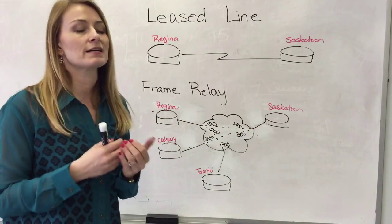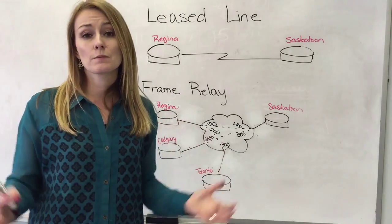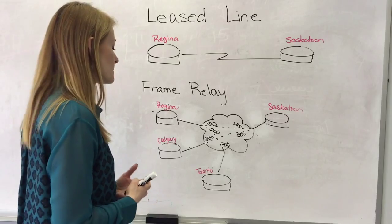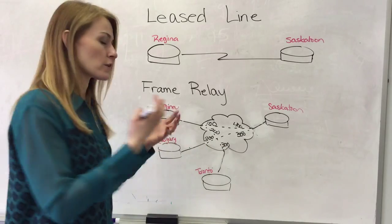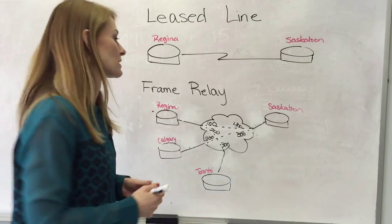So just think of that DLCI as the number referring to the exit interface and there can be duplicates because they only matter to that specific endpoint, that router that's shooting it out.